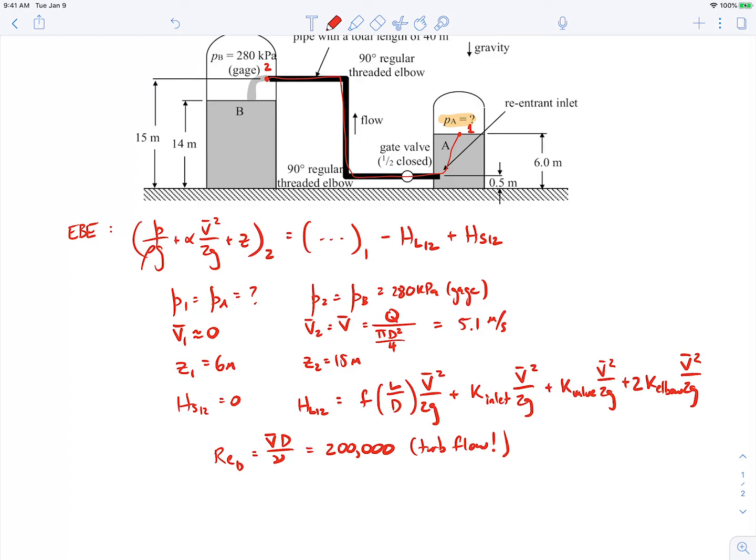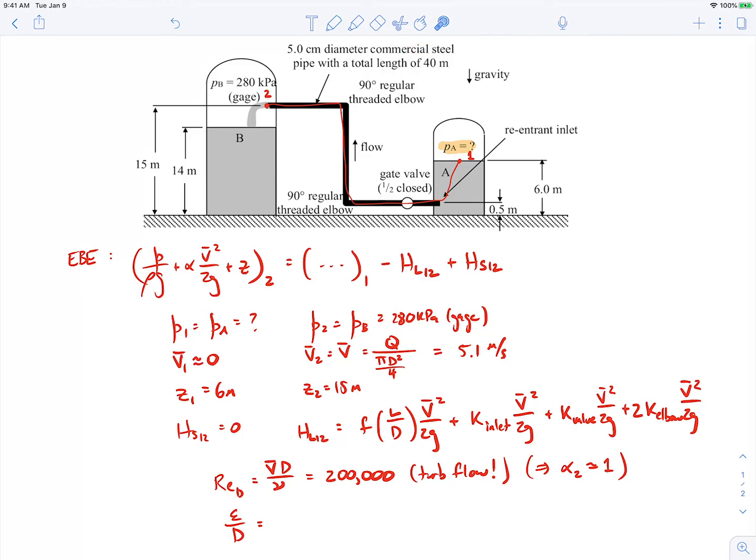By the way, since we know that, we also know that the kinetic energy correction factor at location 2 here will be equal to 1. I'll put that as a note here. Alpha 2 is equal to 1 because it's turbulent. The relative roughness, let's write that down. Relative roughness I'll be able to find as well because I'm told that we're dealing with commercial steel. So I can look up the roughness for that from a chart. If you go to the formula sheet that we use for the class and then look up the roughness for commercial steel, what you'll find is that comes out to be 4.5 times 10 to the minus 5 meters. And of course, we know the diameter of the pipe is 5 centimeters. So that's 5 times 10 to the minus 2 meters. So the relative roughness comes out to be 9 times 10 to the minus 4.